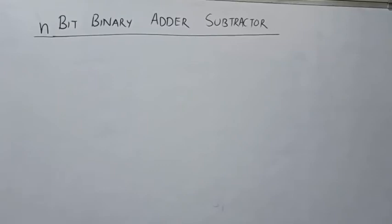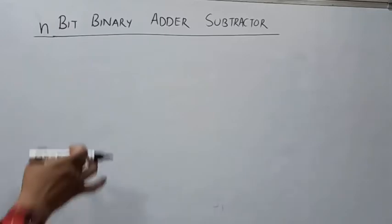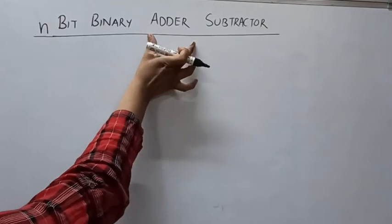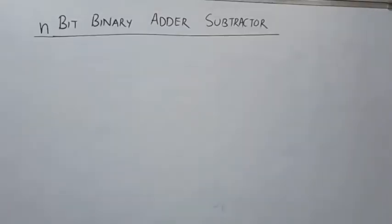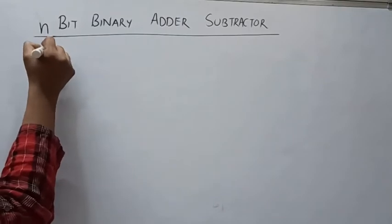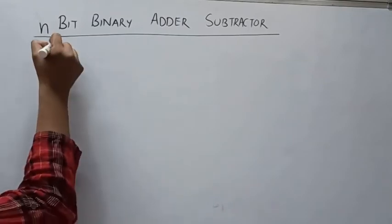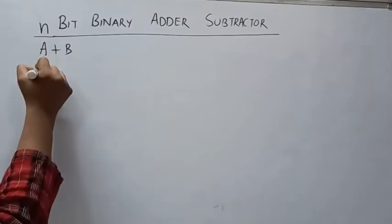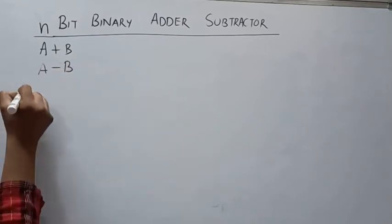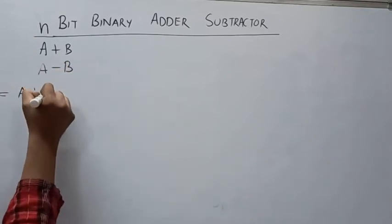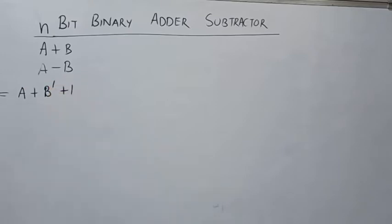If I am going to create the N-bit binary adder-subtractor — a circuit where you can perform both addition and subtraction. Writing A plus B for addition, and A minus B for subtraction. In the A minus B operation, what is going on? It is A plus the 2's complement of the second variable, that is A plus B complement plus 1.